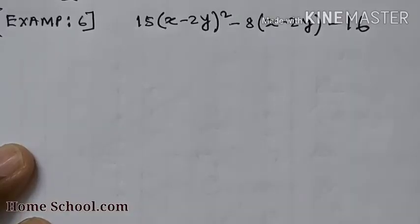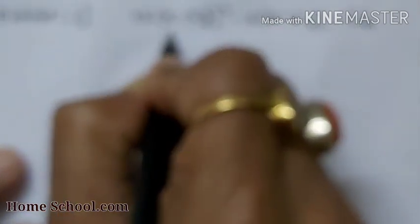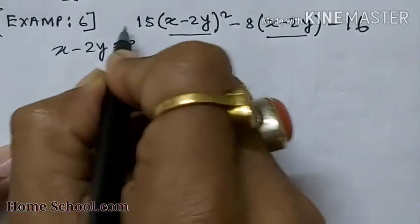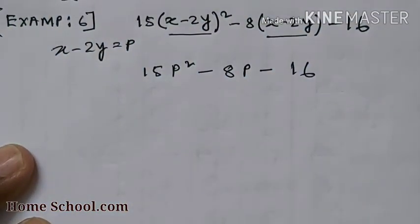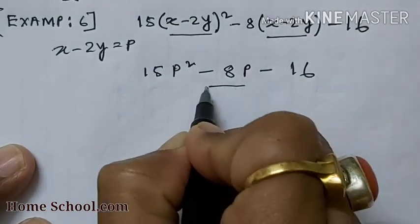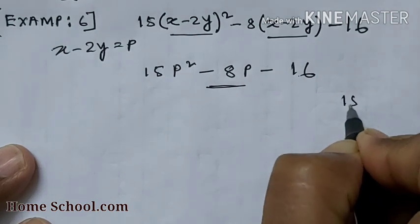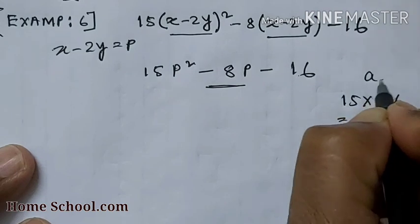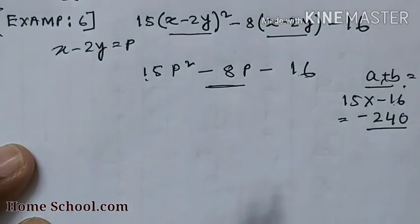The next polynomial is 15(x − 2y)² − 8(x − 2y) − 16. Don't panic when you see this kind of problem. We assume x − 2y = p, so the equation becomes 15p² − 8p − 16. As per what we have learned, we need to find two integers whose sum is −8 and whose product is 15 × (−16) = −240.